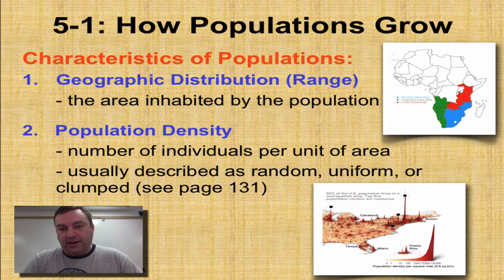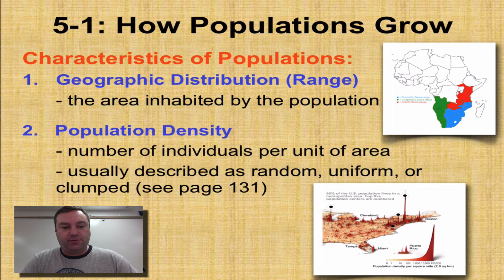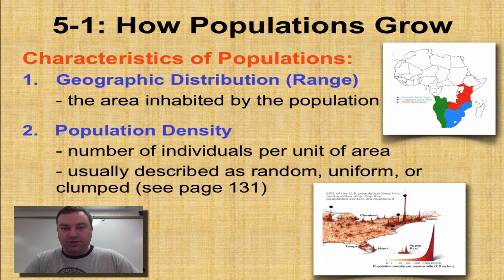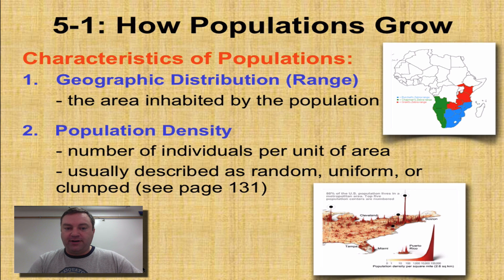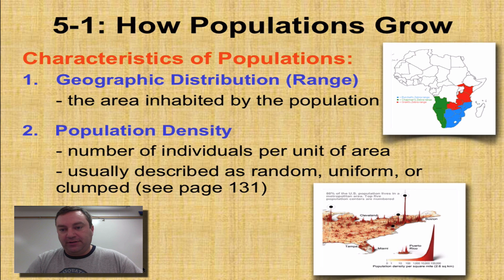There are four characteristics of populations, and two of them are shown on the screen. The first is geographic distribution, which we'll refer to as range from here on out. Range is the area inhabited by a population.